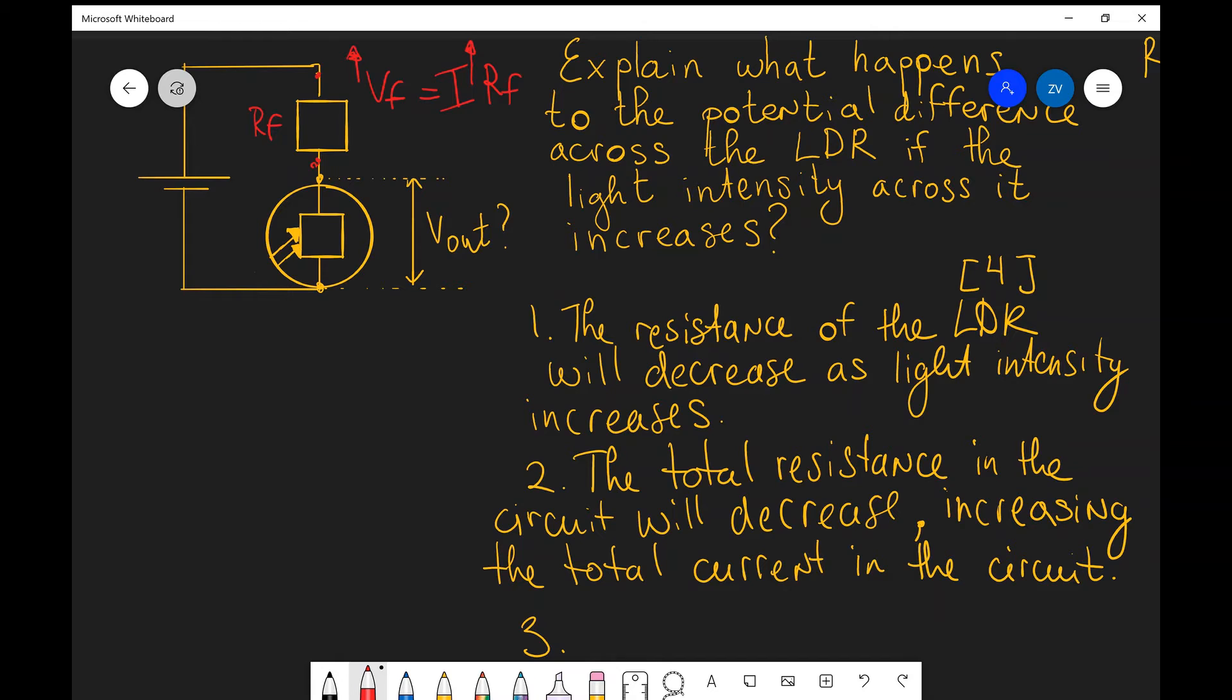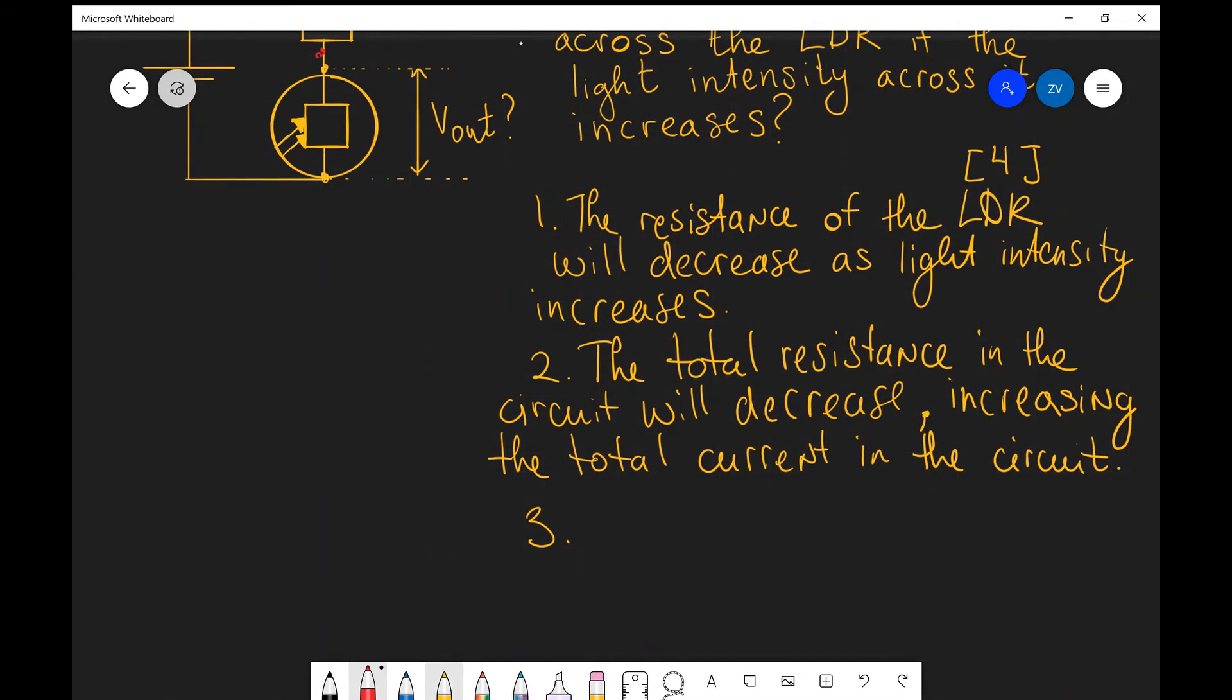This is just due to proportionality. Okay well let's write that down. So the PD or the potential difference across the fixed resistor increases. So it does exactly the same what the current does. So that increases.